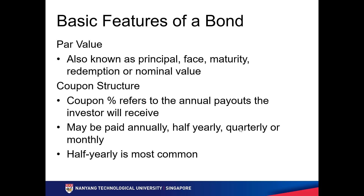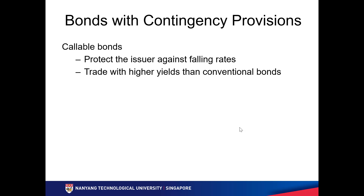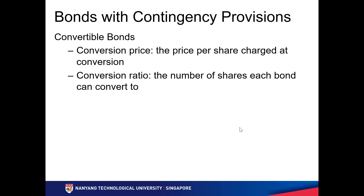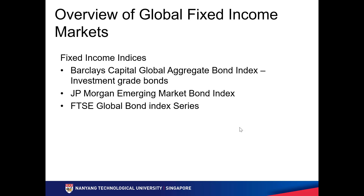Callable bonds mean the company can call back the bonds, so the company must offer a higher interest rate since they can take back the bonds at any time. Putable bonds mean the investor can put the bonds back to the issuer, so the coupon rate is lower — but when interest rates go up, you can put the bonds back and buy new ones at higher rates. Convertible bonds allow you to convert the bond into shares — if the share price goes up, you convert from bonds to shares.